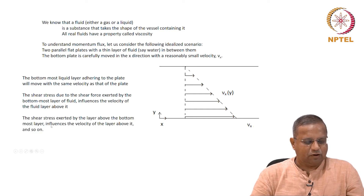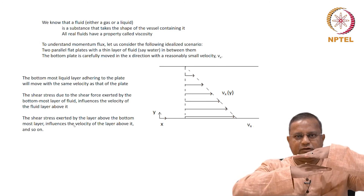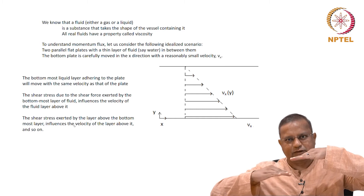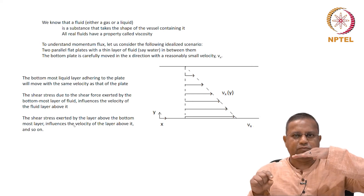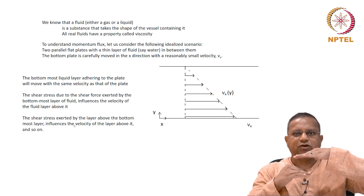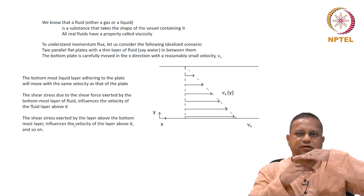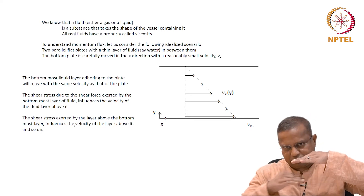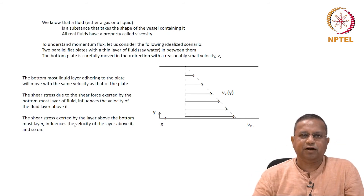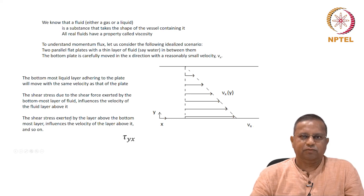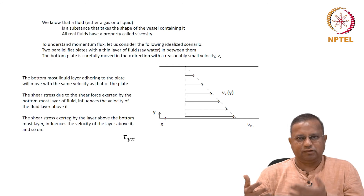The shear stress exerted by each layer influences the velocity of the layer above it, and so on and so forth. The bottom plate moves in the positive x direction with a small velocity vx. The layer closest to the bottom plate attaches and moves with vx, exerting a shear force on the layer just above it, which in turn exerts a shear stress on the layer above it — and so on. We have been talking about shear stress and need to define it clearly; we know it is shear force per unit area.